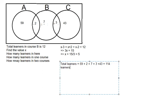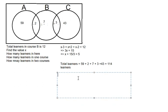Next, how many learners in one course? We calculate 59 + 7 + 43 = 109 learners. Total learners in two courses: we have 2 and 3, which equals 5 learners.